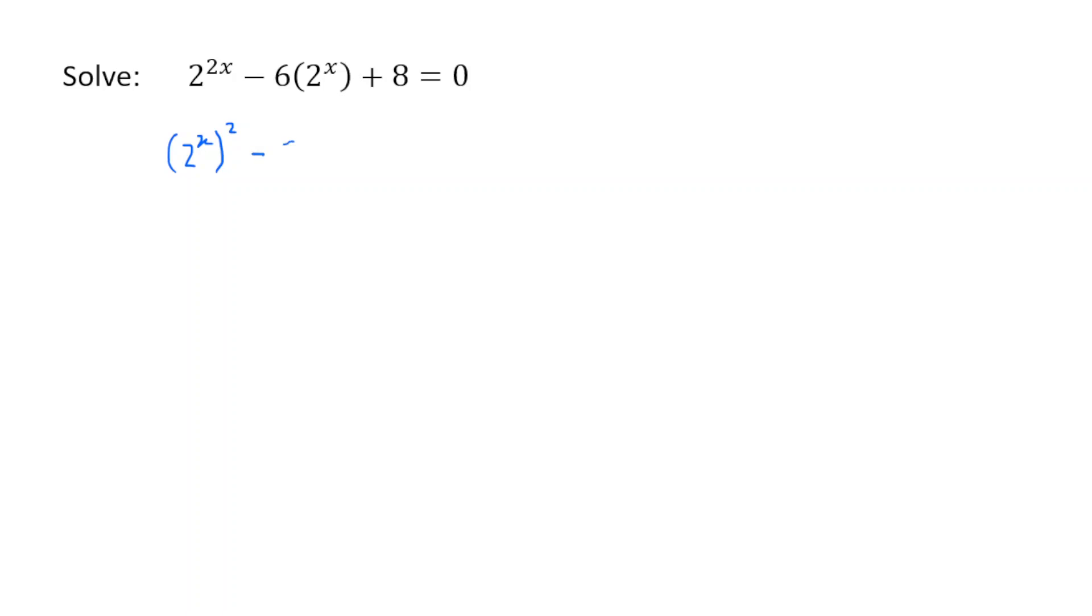Now we can just rewrite this: 6 times 2 to the power of x plus 8 is equal to 0. And then we can make a substitution. We can say let y equal 2 to the x.